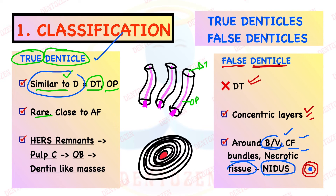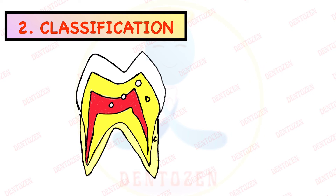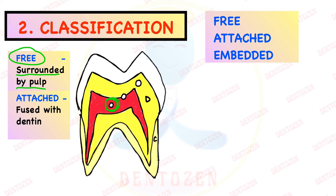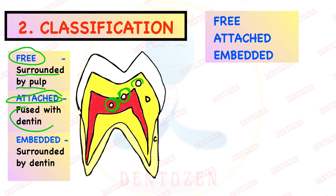To summarize the difference: true denticles are similar to dentine; false denticles are not similar to dentine. The second classification is based on location relative to dentine: free, attached, or embedded. Free pulp stones lie freely inside the pulp, surrounded by pulp on all sides. As secondary dentine keeps forming, these pulp stones get attached to the dentinal wall and are then called attached pulp stones — fused with the dentinal wall, partly in the pulp and partly attached. When completely surrounded by dentine, they are called embedded pulp stones.